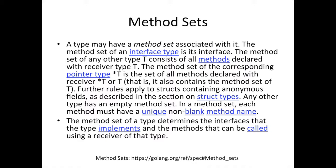You might be thinking: the method set for T is all methods defined to receive T, but for pointer T we're including methods defined for T as well — and that is true. The pointer type's method set also contains the method sets of T. For rules applying to structs containing anonymous fields, we'll ignore that for now — we already covered anonymous fields.